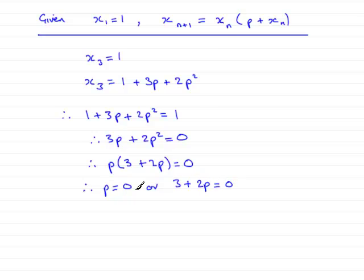But we're told in the question that p doesn't equal 0, so therefore that rules that out. Since p does not equal 0, therefore 3 plus 2p must be the one that's equal to 0.